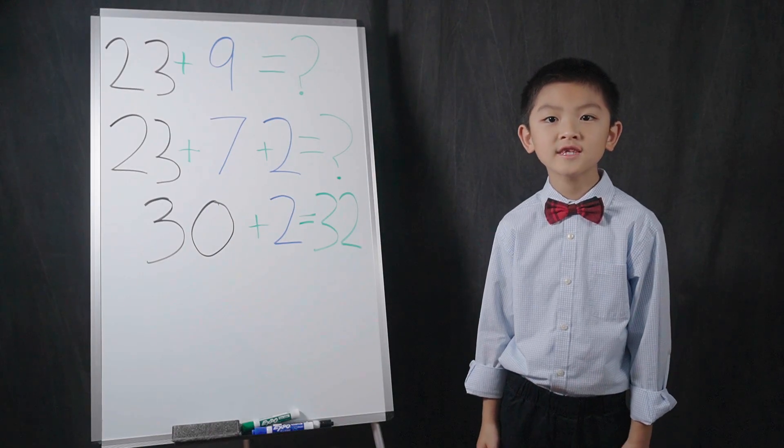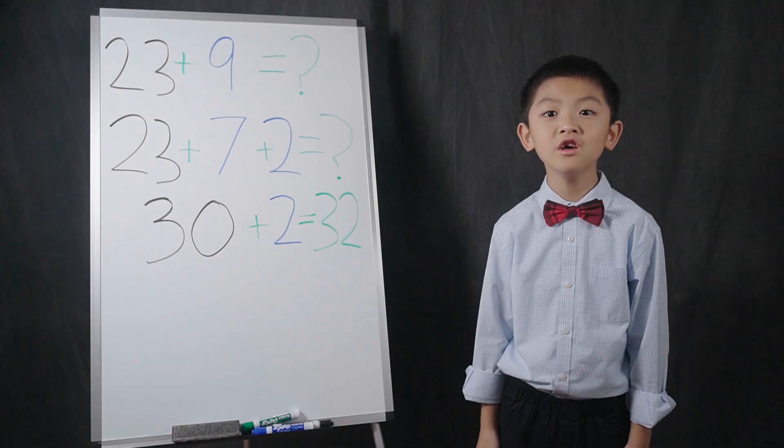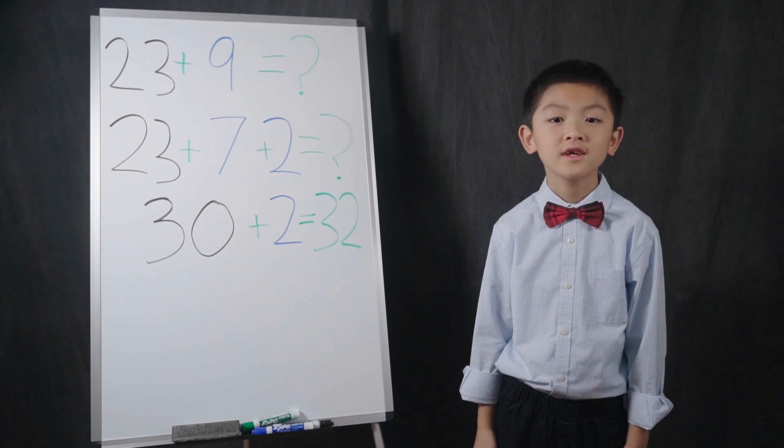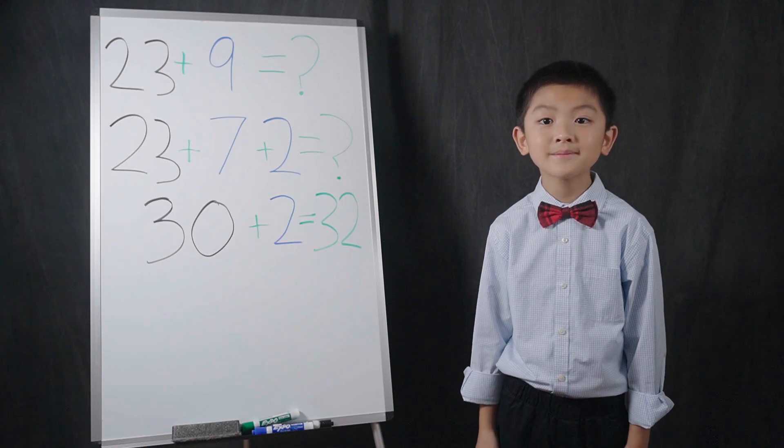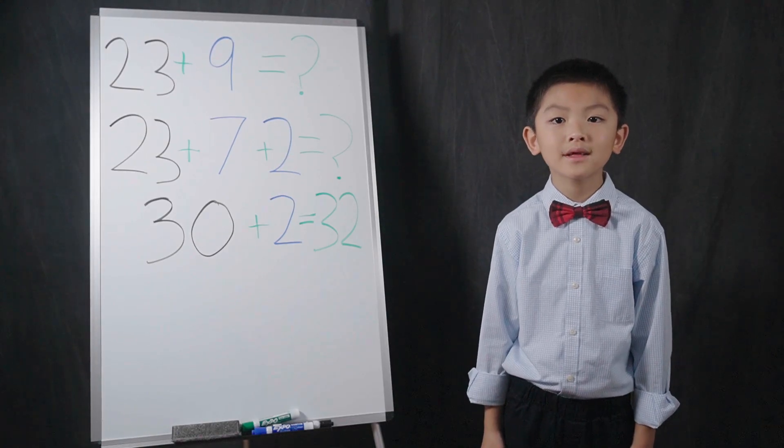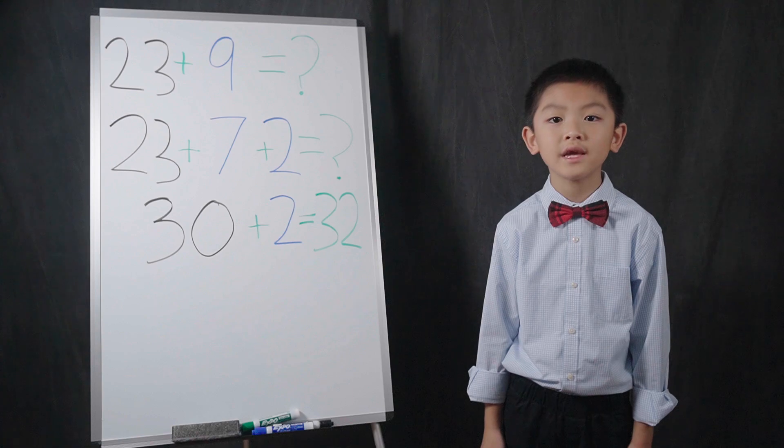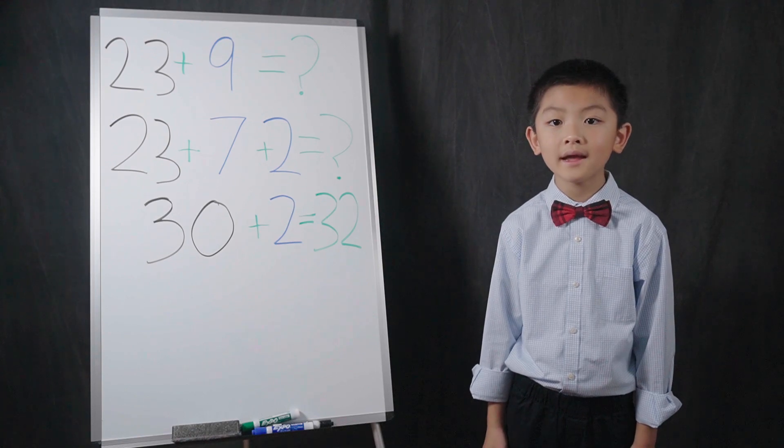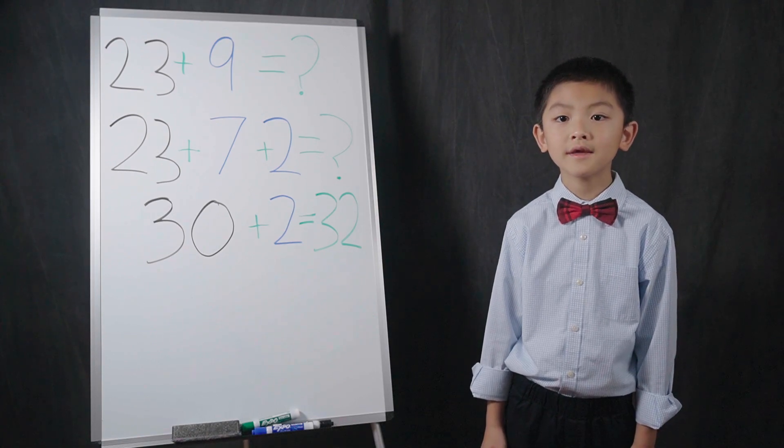Here is another example with bigger numbers. In this case, the next multiple of 10 after 20 is 30. So, I want the left side to equal 30. So, I need to break the 9 into 7 and 2, like this.